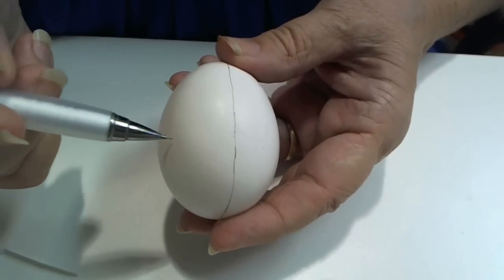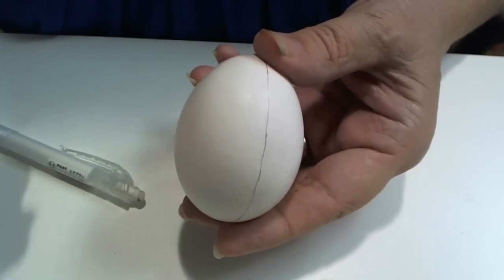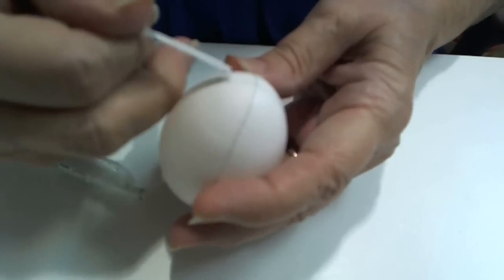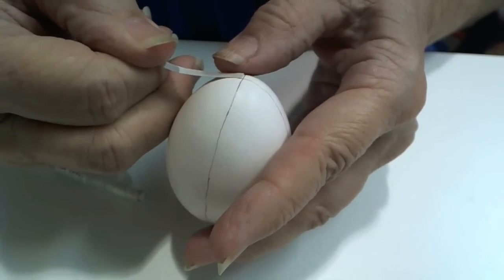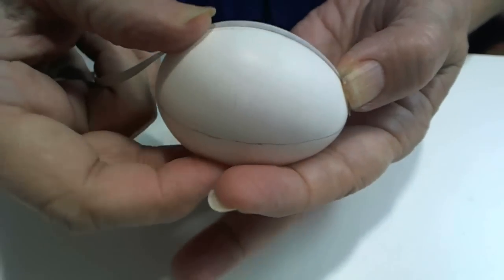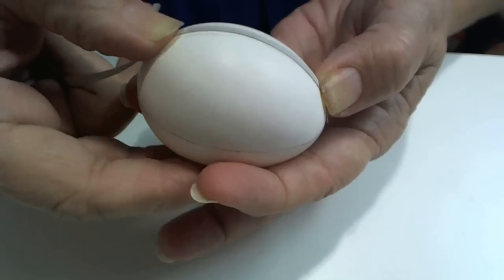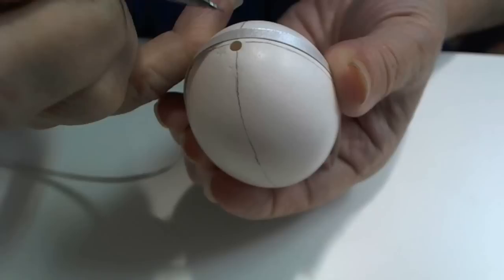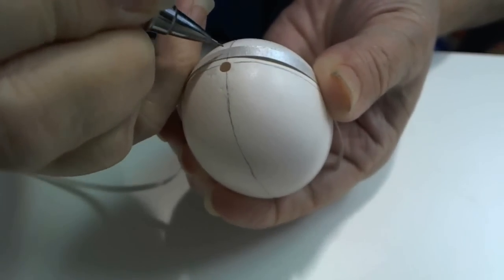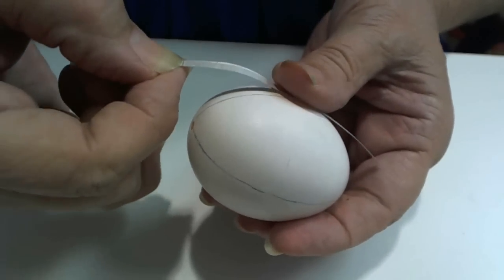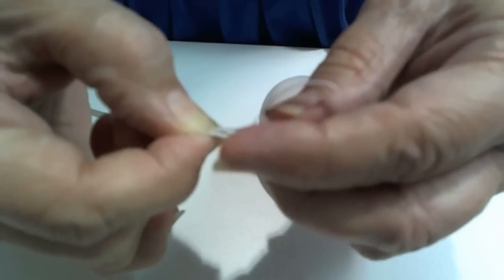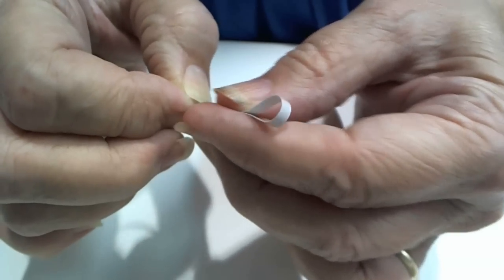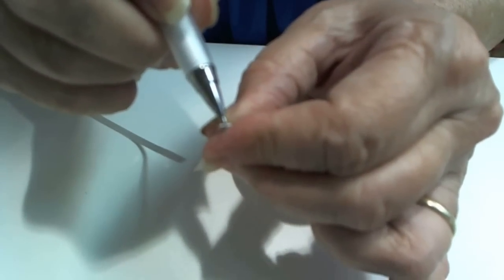Next thing I want to do is find the center. To do that again, I will take my strip of paper. But this time, I will start at this crisscross mark. Just make sure I lay it down right where the crisscross meets. Wrap the paper down the egg until I come to the bottom crisscross. Again, here I will mark my paper.